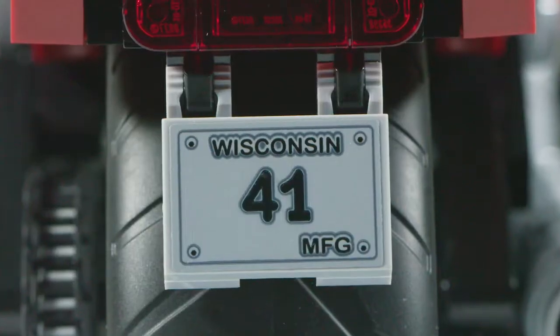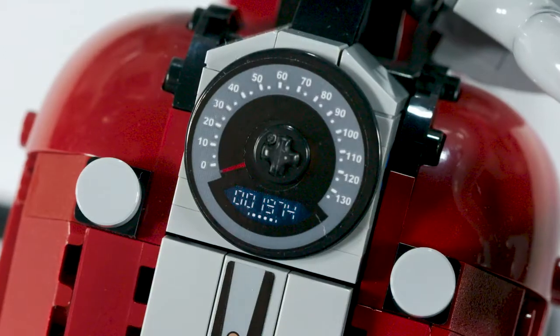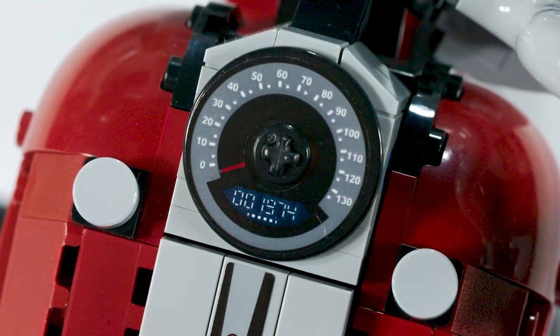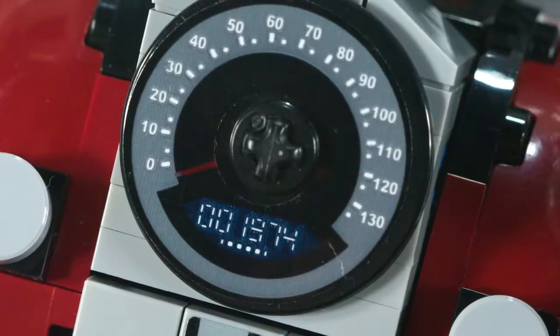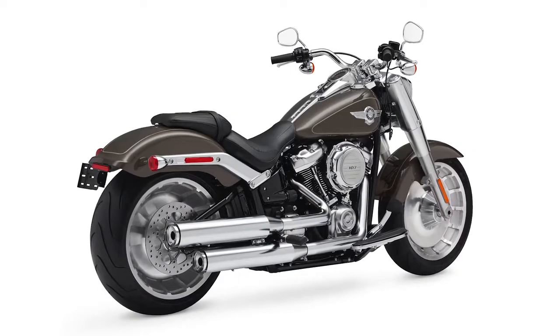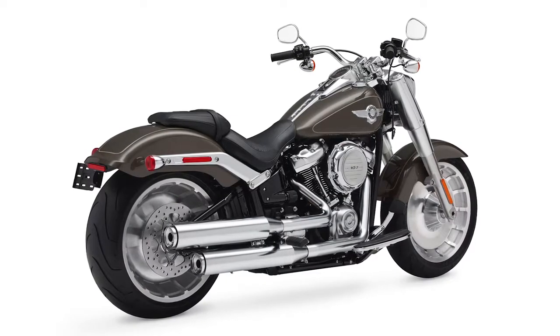On the rear number plate we have 41—that's actually a manufacturer's license plate that's used by Harley-Davidson in Wisconsin. On the instrument cluster we have the odometer, and that is set to the birth year of a guy who works at Harley-Davidson. His name is Casey, and he's the designer of the 2018 Harley-Davidson Fatboy, so the real motorcycle. We put that in because we actually worked really closely with him when we developed this LEGO model.